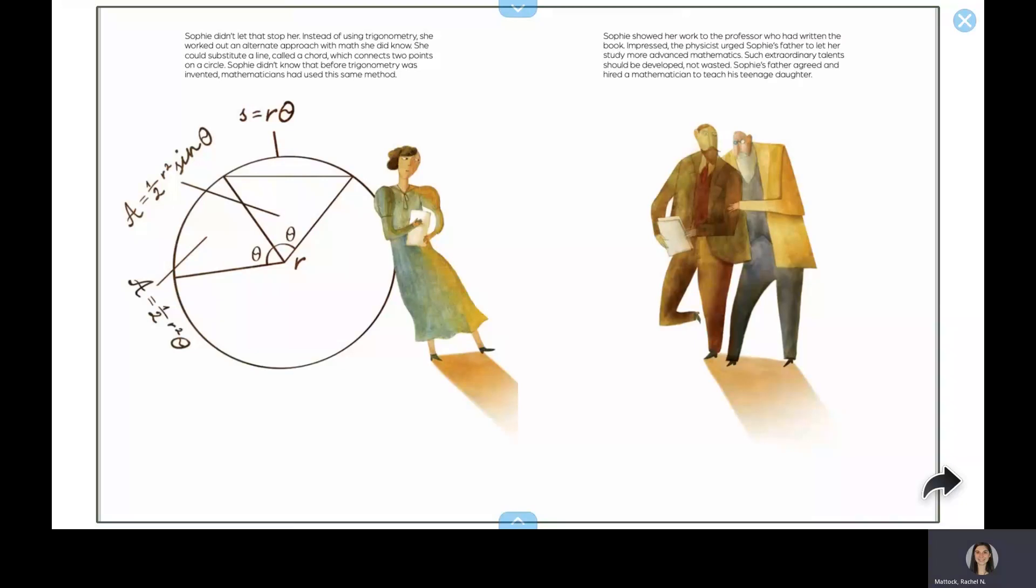Sophie didn't let that stop her. Instead of using trigonometry, she worked out an alternate approach with math she did know. She could substitute a line, called a chord, which connects two points on a circle. Sophie didn't know that before trigonometry was invented, mathematicians had used this same method.